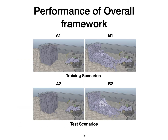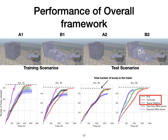We also evaluate the performance of our overall framework including the online adaptation and task planning modules in simulation. For training the binary classifier in the online adaptation module, we use environments A1 and B1 as shown in the figures, and subsequently test on environments A2 and B2. Environments A1 and A2 comprise configurations representing well-stacked and structured walls of boxes, while B1 and B2 are more unstructured. The plots on the bottom show the performance of our framework PLR compared to purely executing the hardcoded strategy or purely executing the nearest neighbor planned strategy. PLR consistently does better than hardcoded in both test environments, empirically proving that we do not obtain a performance worse than a domain expert.